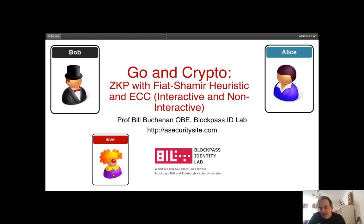Let's have a look at zero knowledge proofs, and with this we'll be using the Fiat-Shamir heuristic. To keep it up to date, we'll use elliptic curve cryptography. First we'll show the interactive proof and then the non-interactive proof. Overall we'll be using the Go programming language as it's a very powerful technique to implement cryptography.